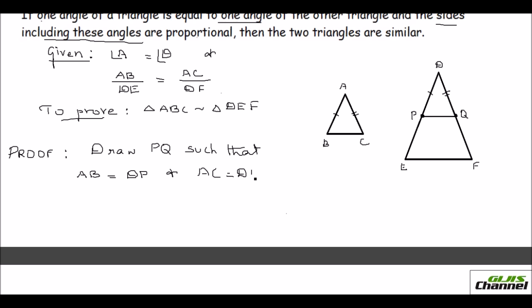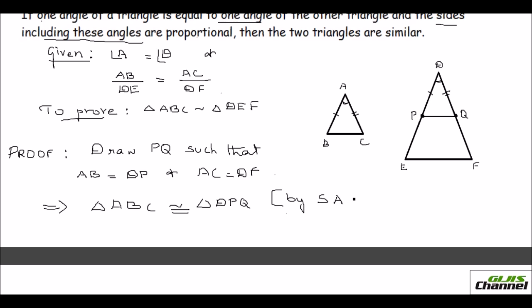Now since we have two sides congruent and the included angle same — angle A and angle D are the same — I can say that triangle ABC and the small triangle DPQ are congruent, not similar. They are congruent because they have one equal angle and the corresponding two sides are the same. This is by SAS congruency.